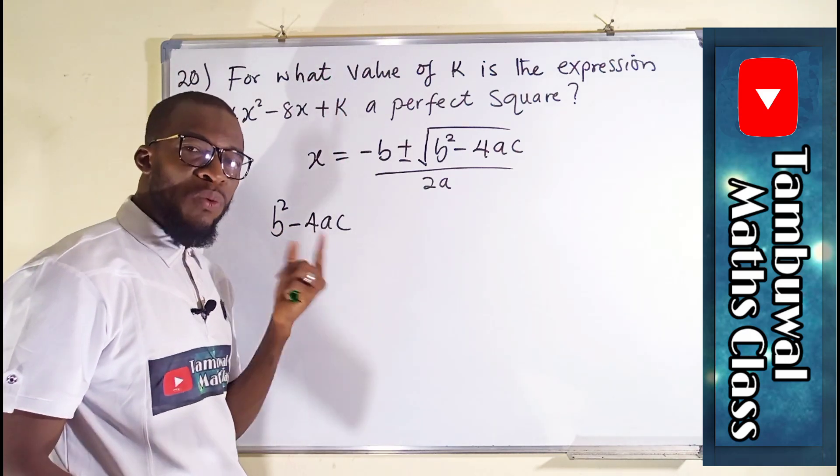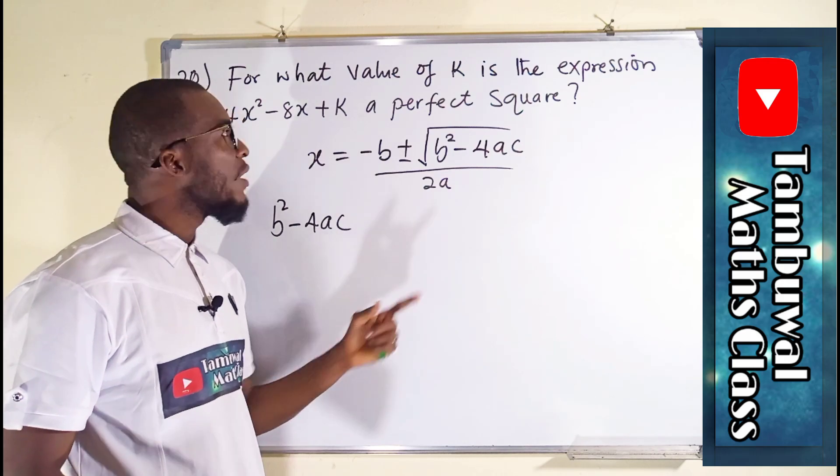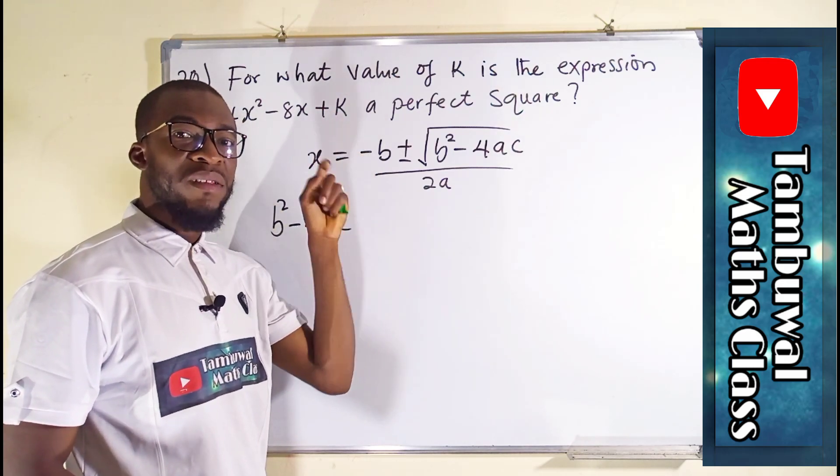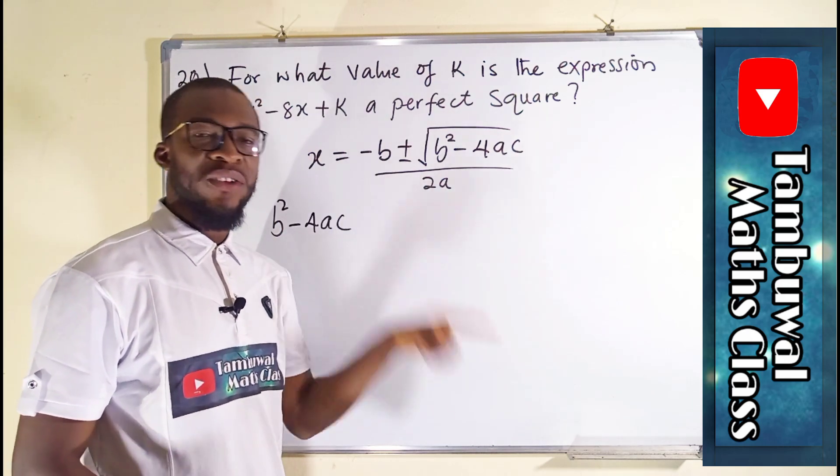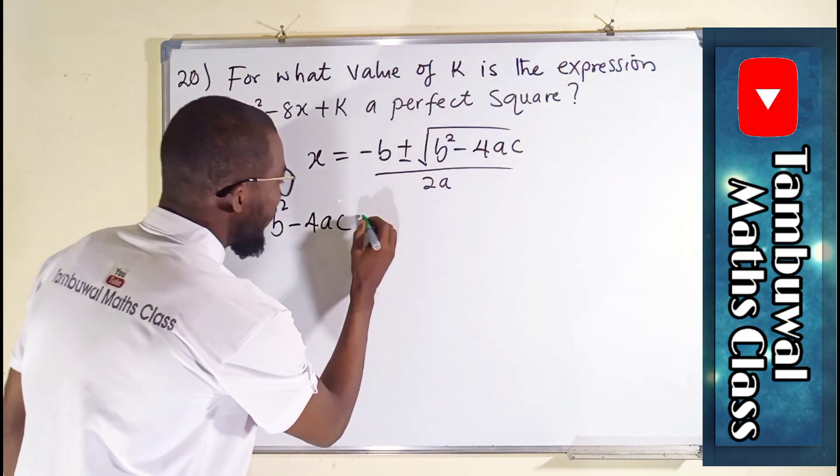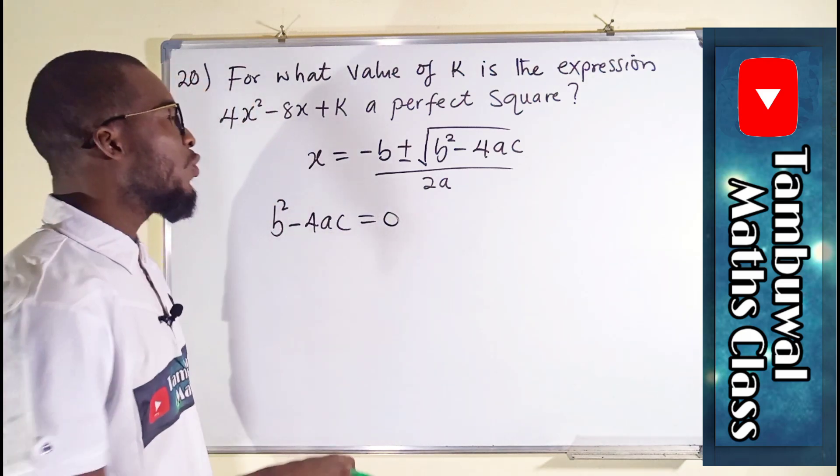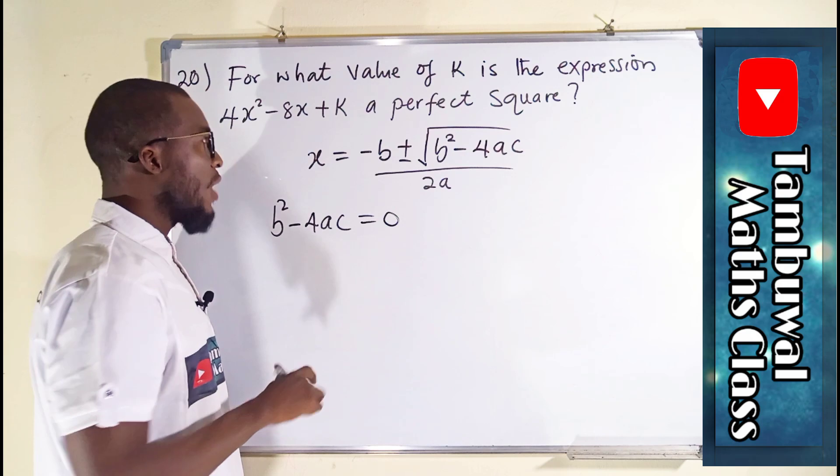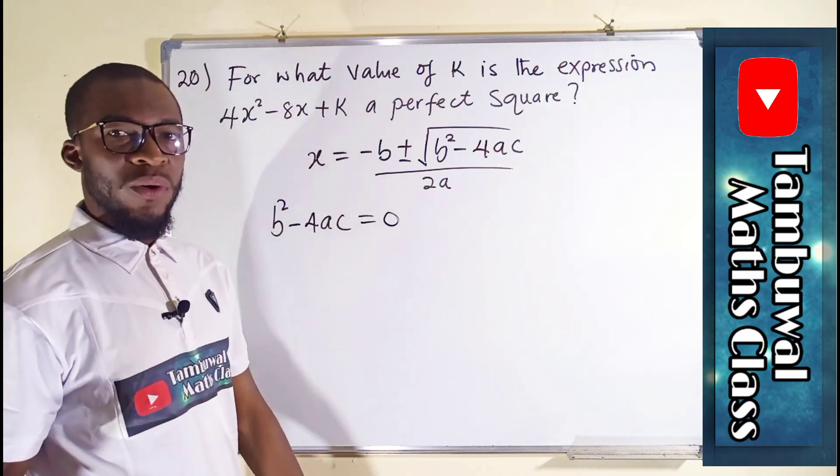If this value is equal to 0, that quadratic expression or quadratic equation is said to be a perfect square. So if this is equal to 0, we are good to go. So I have to use this information here, and we are going to find the corresponding value of k.